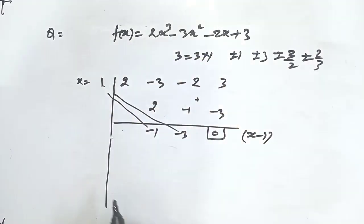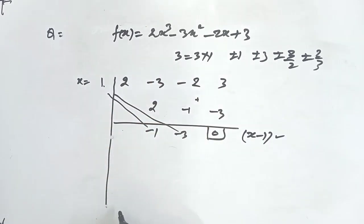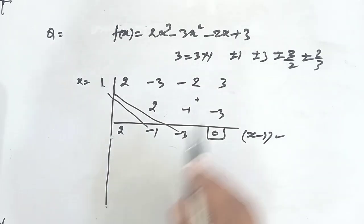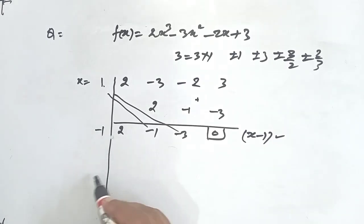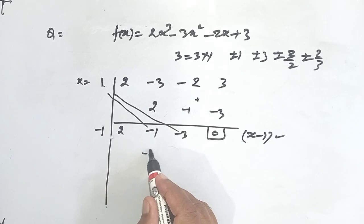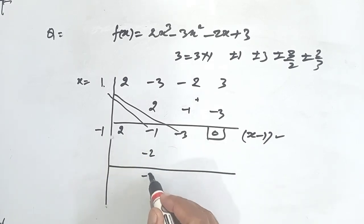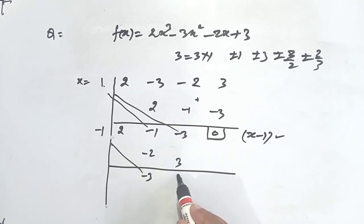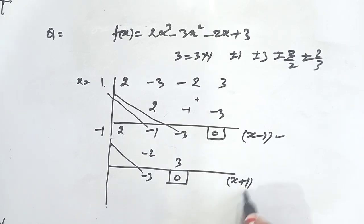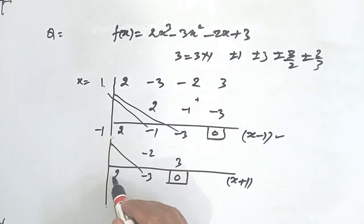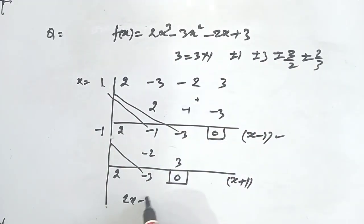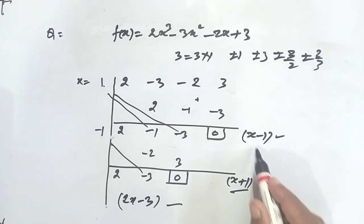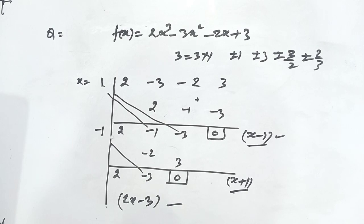To find the second factor, we repeat the process with the remaining coefficients 2, -1, -3, and try x = -1: multiply 2 by -1 to get -2, add to -1 to get -3 — wait, bring down 2, multiply by -1 gives -2, add to -1 gives -3, multiply by -1 gives 3, add to -3 gives 0. So (x + 1) is another factor. The remaining factor is (2x - 3). Thus f(x) = (x - 1)(x + 1)(2x - 3).